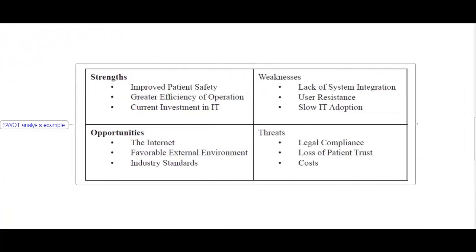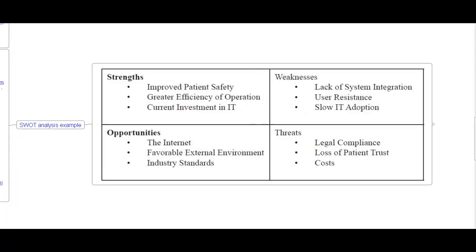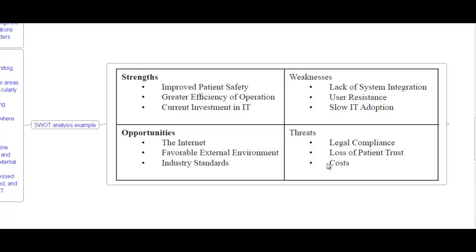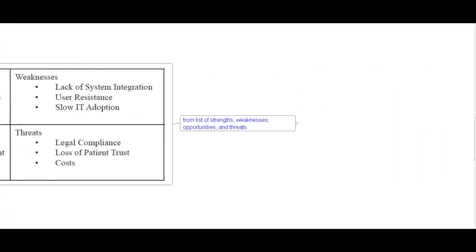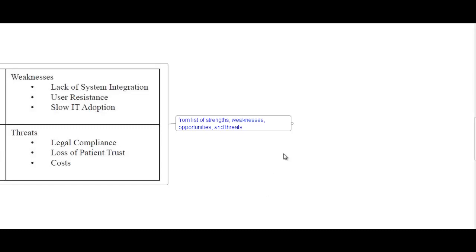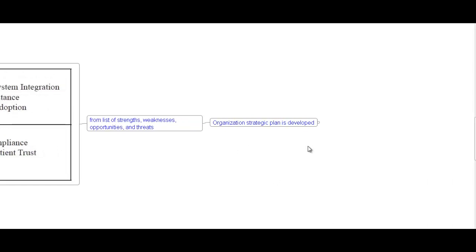SWOT analysis example: Strengths — improved patient safety, greater efficiency of operations, current investment in IT. Weaknesses — lack of system integration, user resistance, slow IT adoption. Opportunities — the internet, favorable external environment, industry standards. Threats — legal compliance, loss of interest, and cost. Remember: strengths and weaknesses are internal factors, while opportunities and threats are external factors. From this SWOT analysis, an organizational strategic plan is developed.